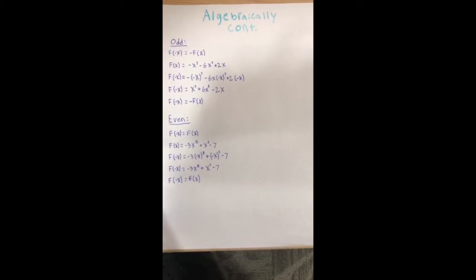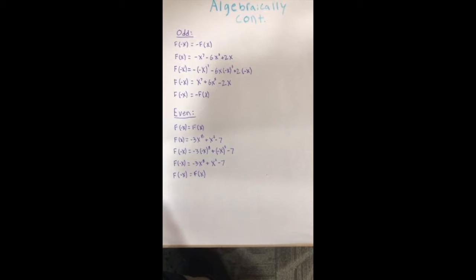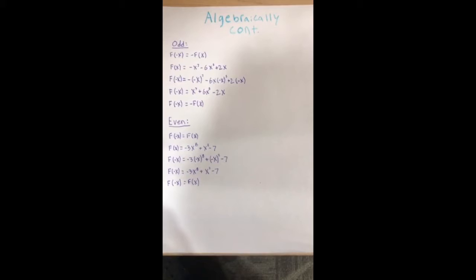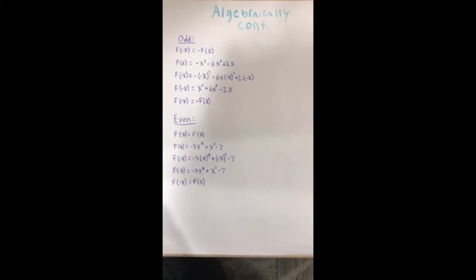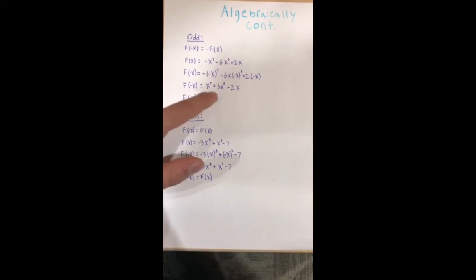Now I will prove algebraically how we can differ from an odd function or an even function. For odd functions, if f(-x) equals -f(x), this gives us an odd function. When we sub in the minus x for all the x values and simplify, we get back the original equation. However, with all terms having their opposite signs. The equation we start off with, we sub in minus x, and it all equals out to the exact same equation with opposite signs.